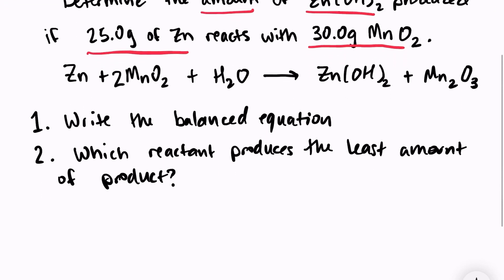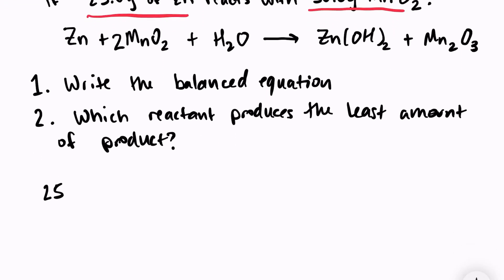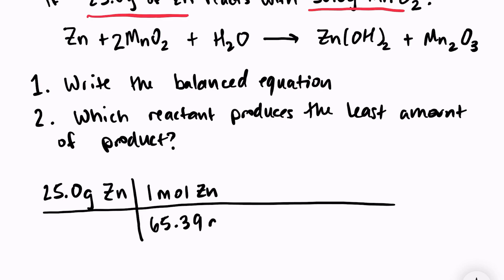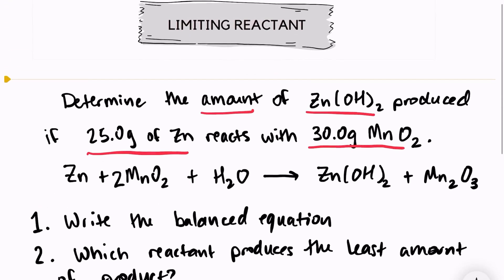So let's get started. We have 25 grams of zinc and we want to know how much zinc hydroxide is produced. The first step is always to go into moles. So one mole of zinc over the molar mass of zinc which is 65.39 grams. And then I'm just going to use my mole ratio that I get from my coefficients in my equation.